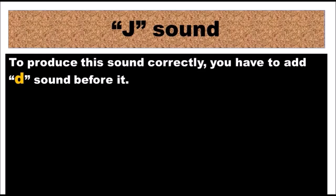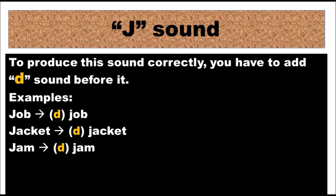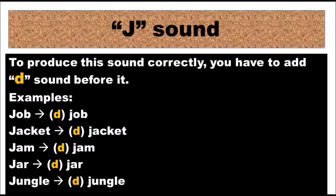The first sound is the J sound. To produce this sound correctly, you have to add the D sound before it. Let's take some examples: in the word 'guys', most people say 'job', but the correct pronunciation is 'job' — make sure you add D before this letter. Jacket, not jacket. Jam, not jam. Jar, not jar. Jungle, not jungle.